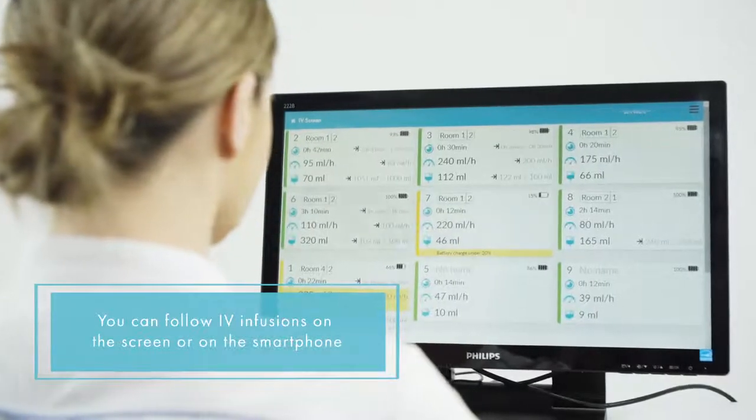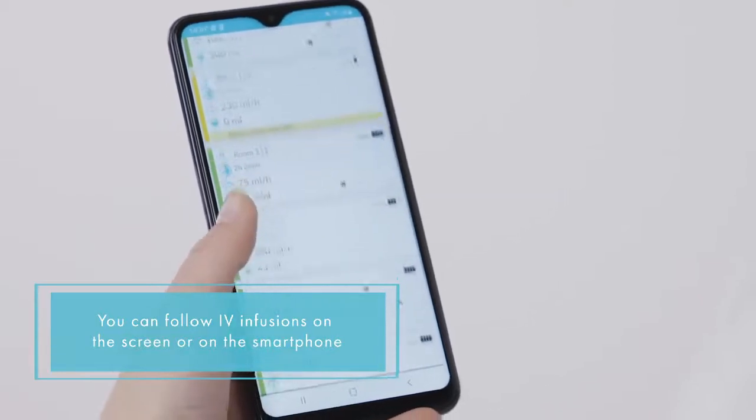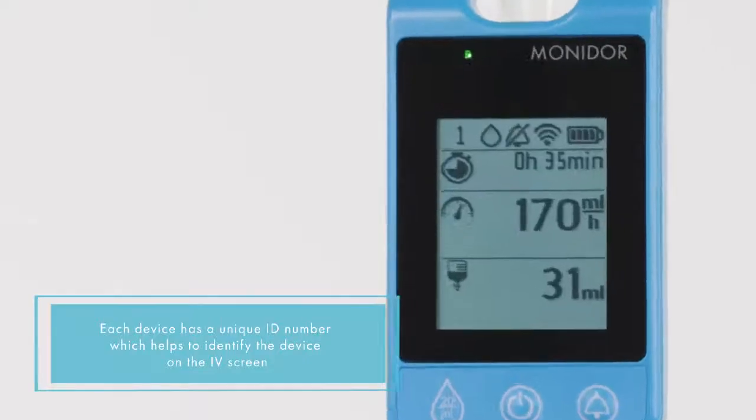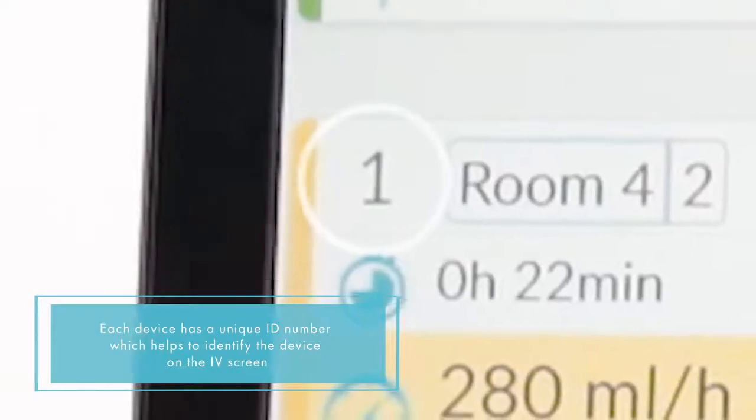When the MoniDrop is switched on, the device data appears automatically on the remote monitoring IV screen. Each device has a unique ID number, which helps to identify the device on the IV screen.